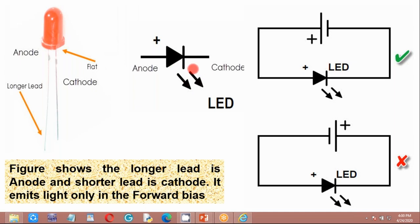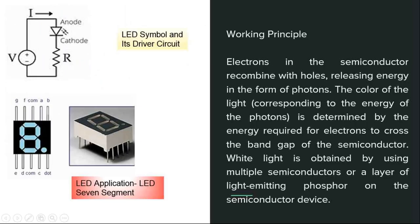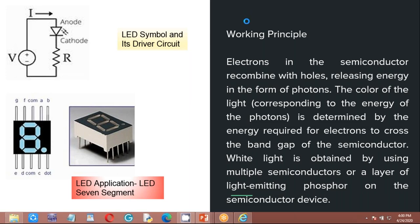There is a positive anode and negative cathode lead. To operate the LED, it must be forward biased. This is the LED driver circuit. The LED driver circuit uses a resistor. You can see the LED is biased. If you connect to ground through a resistor, that is the LED symbol and its driver circuit.